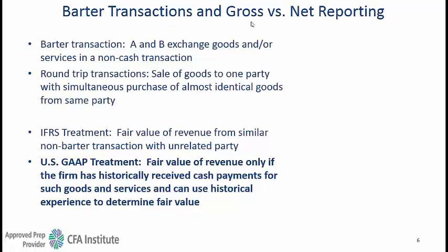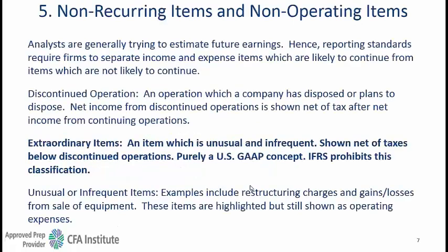For barter transactions and gross versus net reporting, IFRS and US GAAP say slightly different things. IFRS says fair value of revenue from similar non-barter transactions with an unrelated party. US GAAP is more conservative and says that you need to have proof that you have sold that same thing in the past, making US GAAP slightly more conservative.